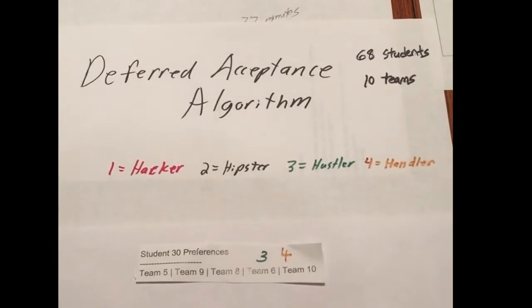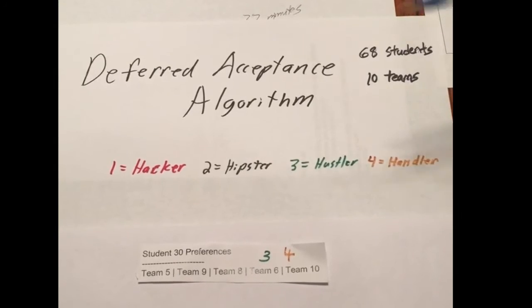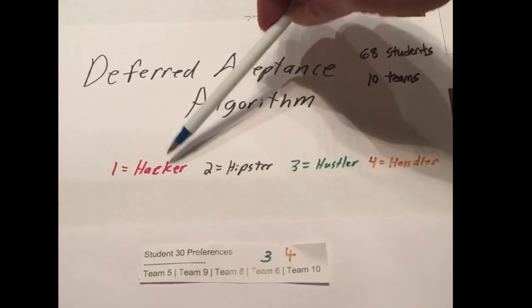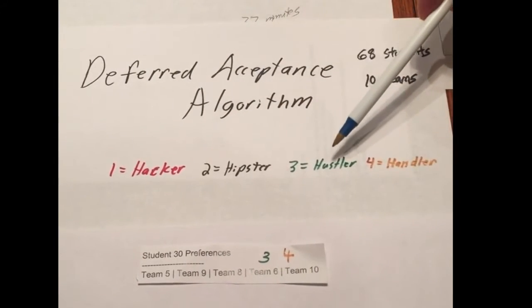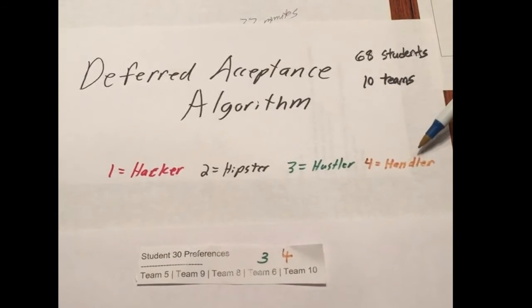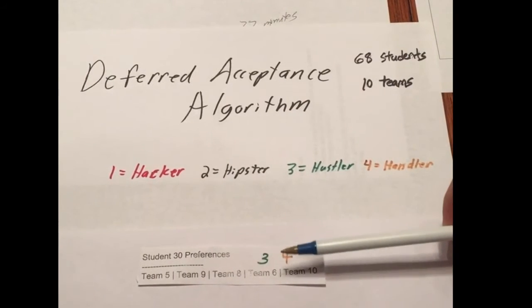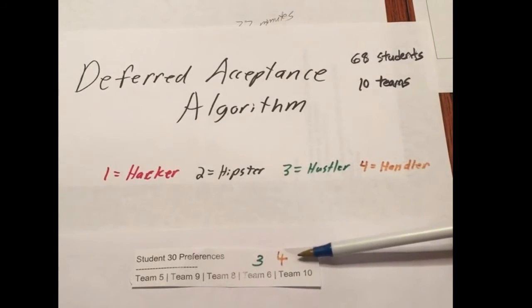And we also indicate their skill sets. In this case, a number one would indicate a hacker, number two a hipster, number three a hustler, and number four is a handler. For Student 30, they are both a hustler and a handler.